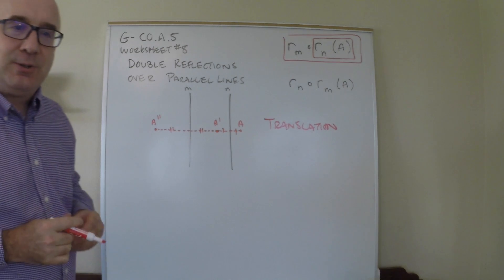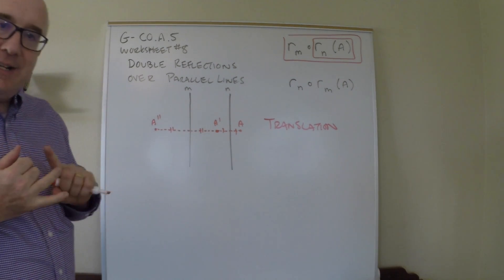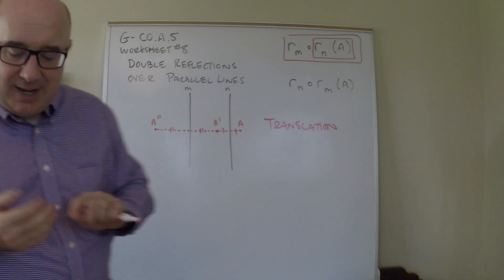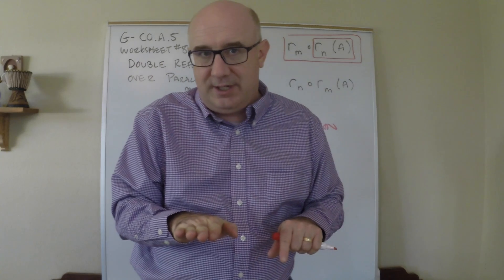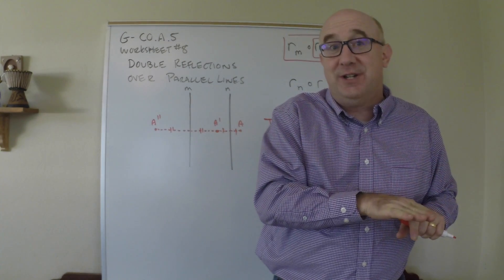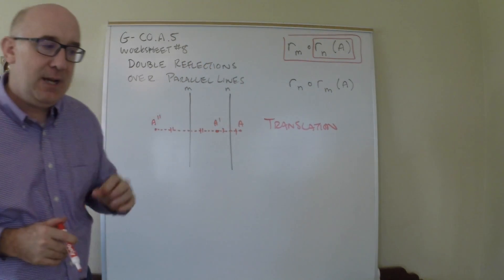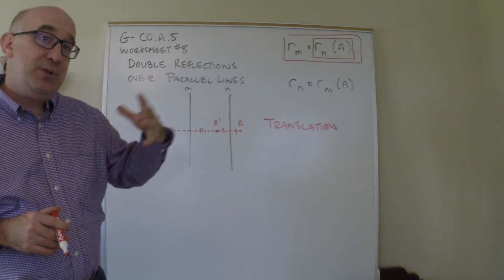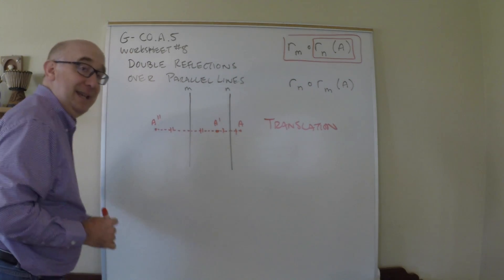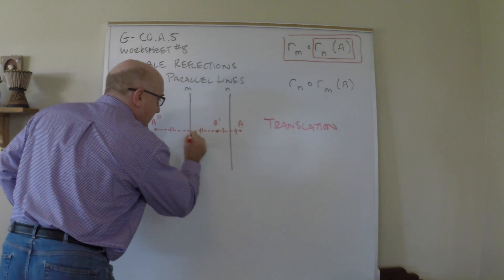Let's also talk about this translation. Not only are we moving in a direction and a distance, but understand that the first reflection reverses orientation and the second reflection reverses it right back to the original. That's why it can be a translation, because translations preserve orientation.